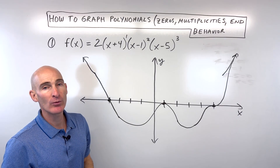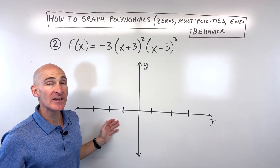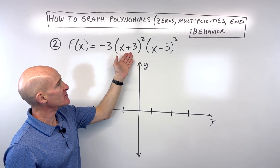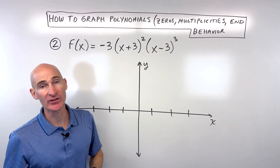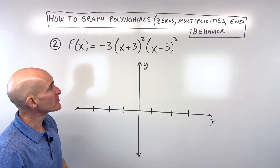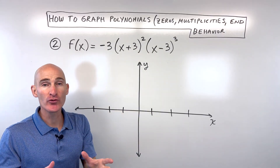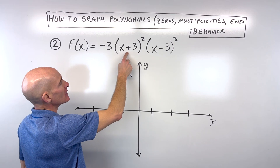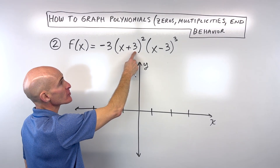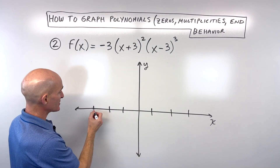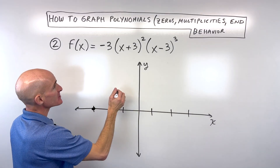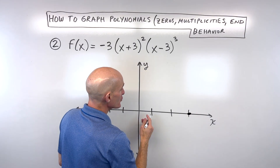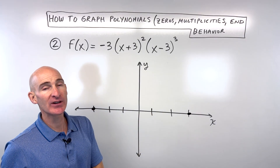Let's take a look at another example. See if you can get a good sketch of this polynomial: f of x equals negative 3 times the quantity x plus 3 squared times the quantity x minus 3 to the third power. The first thing to do is set these factors equal to zero to find our x-intercepts. x plus 3 equals 0 gives us x equals negative 3, and x minus 3 equals 0 gives us x equals positive 3. So those are our two x-intercepts.